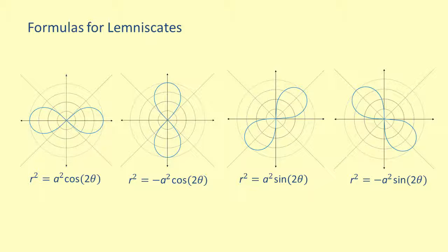Notice that the two lemniscates with formulas containing cosine are symmetric with respect to the pole, the line theta equals pi over 2, and the polar axis, whereas the lemniscates with formulas containing sine are only symmetric with respect to the pole.